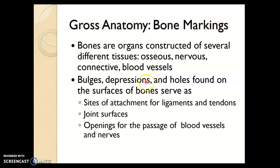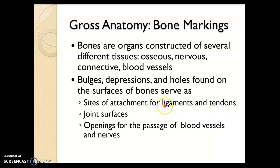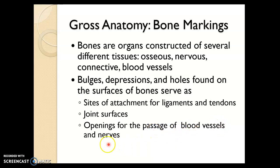If you look at any particular bone, it may have bulges, depressions, or holes. Bulges on bones are there for attachment sites for ligaments and tendons. Ligaments attach bone to bone; tendons attach skeletal muscle to bone. Depressions are typically there for joint surfaces or surfaces for muscle to lay on. Holes in bones are there for passageways for blood vessels and nerves.